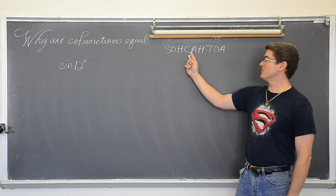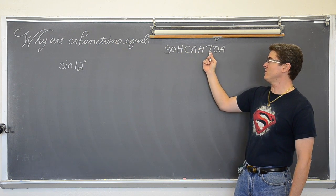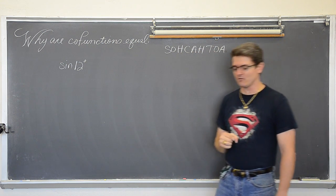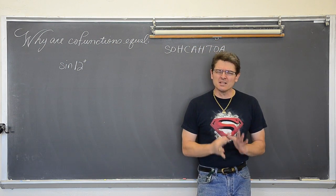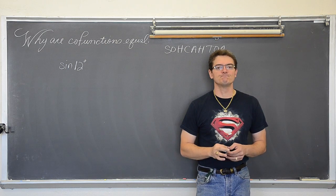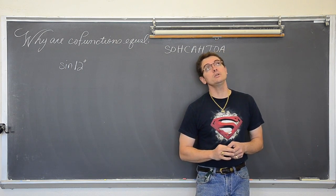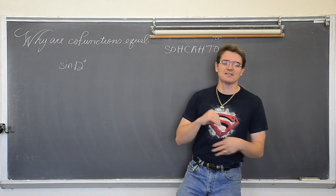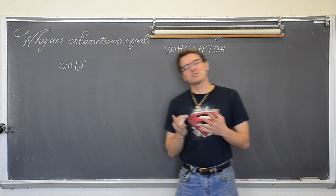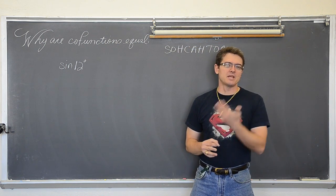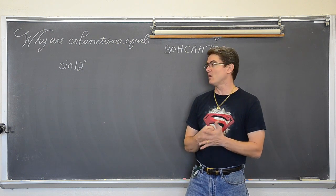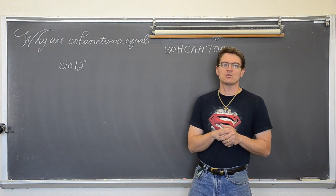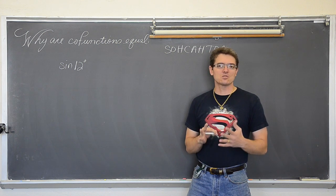That was from SOHCAHTOA. Sine is opposite over hypotenuse. Cosine is equal to adjacent over hypotenuse. And tangent is equal to opposite over adjacent. So again, what do we mainly study in trigonometry? Yes, exactly. You are correct. We are studying right triangles and the rotations around the inside of a circle mostly.